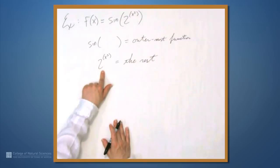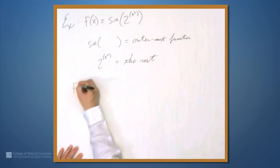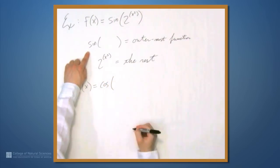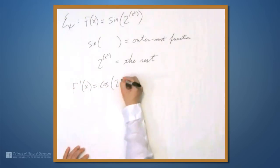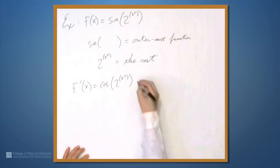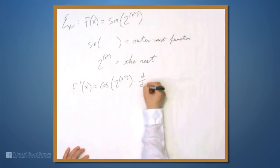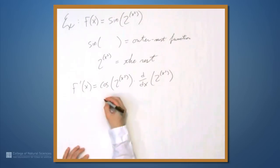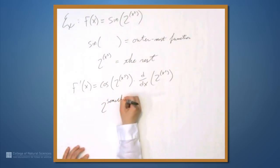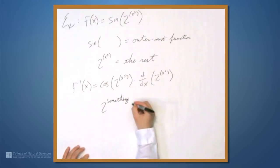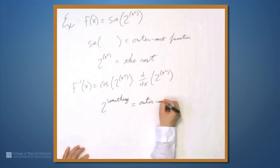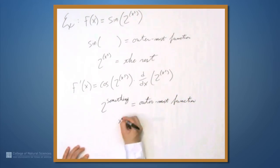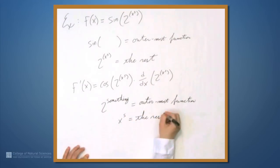The first thing: we're not going to worry about 2 to the x to the fifth — we're just going to look at the sine. So f' of x is the derivative of sine, which is cosine, evaluated at whatever's inside, which is 2 to the x to the fifth. Then times the derivative of 2 to the x to the fifth. Now, 2 to the something is our outermost function, and x to the fifth is the rest.